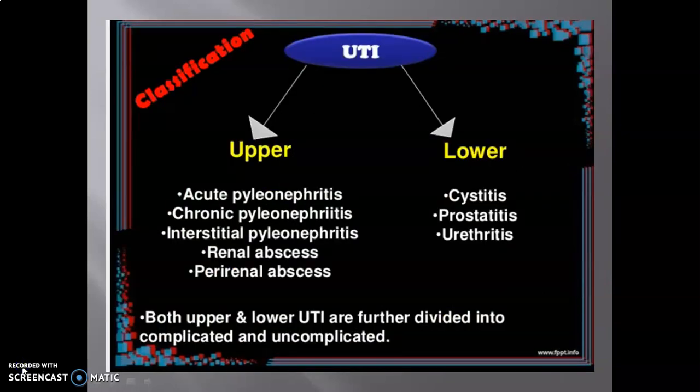In the next slide, we learn about classification of UTI, which is classified in two parts: upper and lower. In upper UTI, diseases involved include acute pyelonephritis, chronic pyelonephritis, interstitial pyelonephritis, renal abscess, and perirenal abscess. In lower UTI, cystitis, prostatitis, and urethritis are present. Both upper and lower UTI are further divided into complicated and uncomplicated.